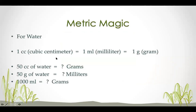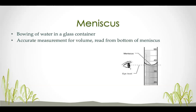For water, one cubic centimeter equals one milliliter, which equals one gram — a one-to-one conversion. So 50 cubic centimeters of water equals 50 grams, and 50 grams of water equals 50 milliliters. A meniscus is the curved line a liquid makes in a glass container like a graduated cylinder, caused by the liquid adhering to the sides. You always measure at eye level from the bottom of the meniscus for an accurate volume reading — this example shows about 36 to 36.5 milliliters.